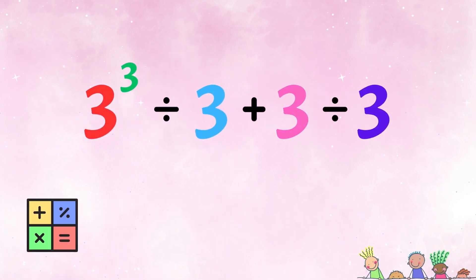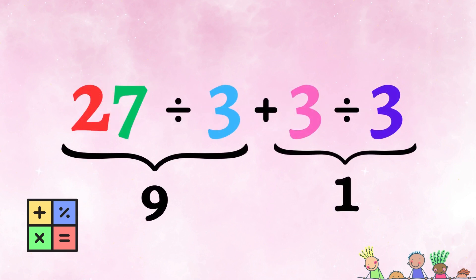The last three variations are quite advanced and rely on using exponents. Our equation looks like this. 3 to the power of 3 divided by 3 plus 3 divided by 3. We know from order of operations that exponents are solved first, so we have 3 to the power of 3, which is 27.